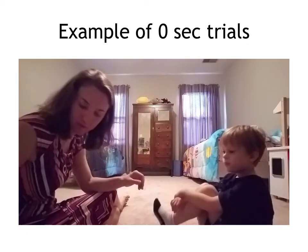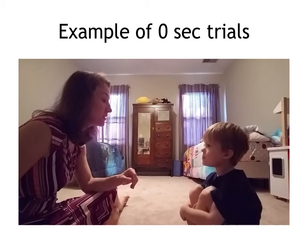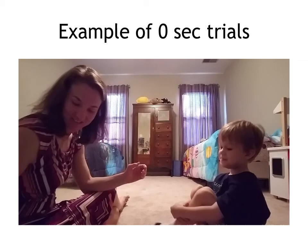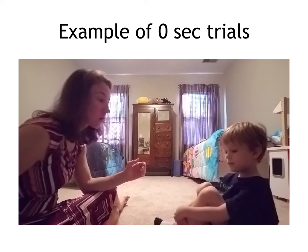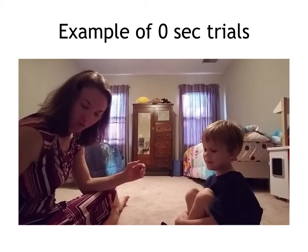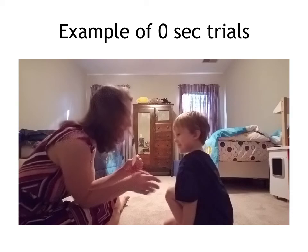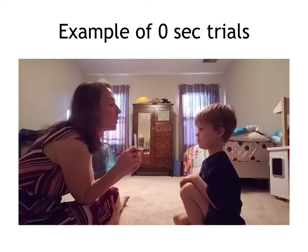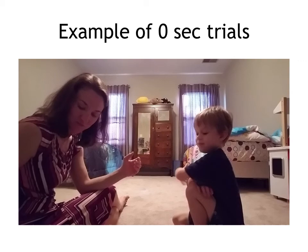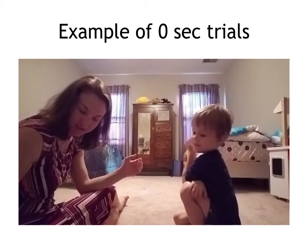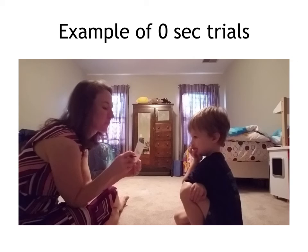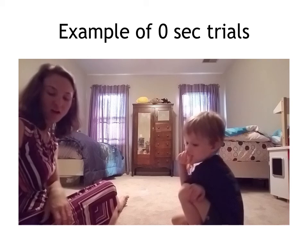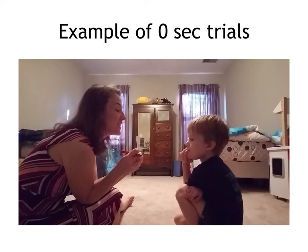Here is an example of zero-second delay. The teacher asks 'What word?' and immediately provides the answer — 'Blue,' 'Yellow,' 'Green,' 'Red.' The student responds and receives praise. This is the zero-second delay phase where the controlling prompt is delivered simultaneously with the request. The teacher provides the word immediately so the student can learn without error, and this continues for the set number of trials.